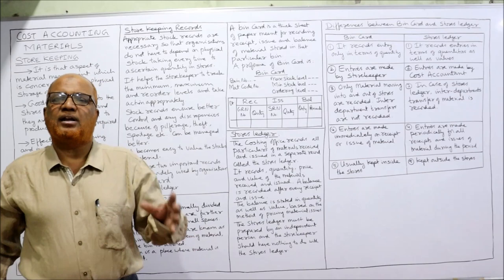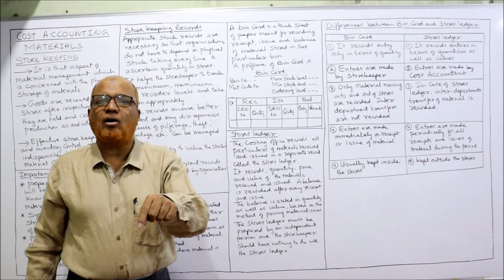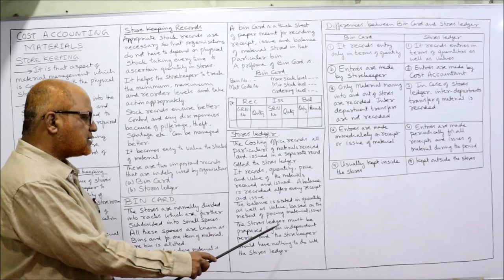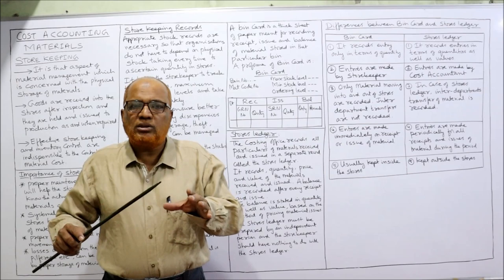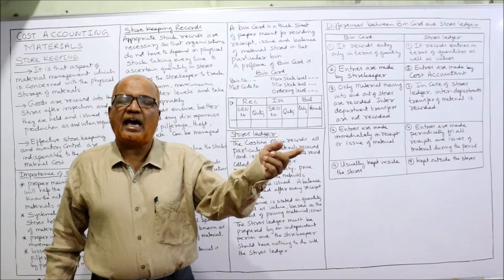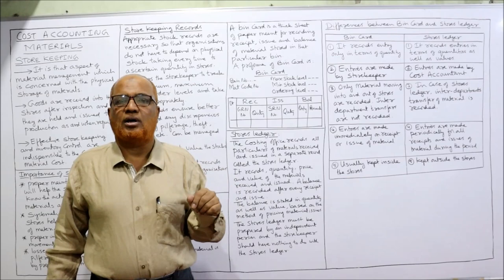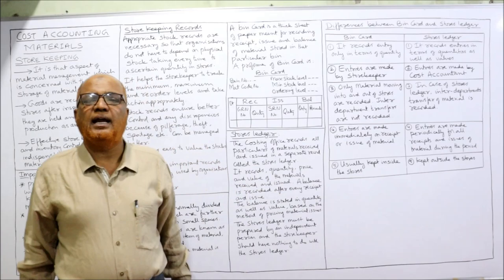The balance in the stores ledger is recorded in quantity as well as value, based on the method of pricing of material. There are different methods of pricing — FIFO method, LIFO method, simple average, weighted average — and accordingly the value of material is recorded. The stores ledger must be prepared by an independent person; the storekeeper should have nothing to do with it. The storekeeper is in stores and the cost accountant is in the costing department — both records are completely independent.